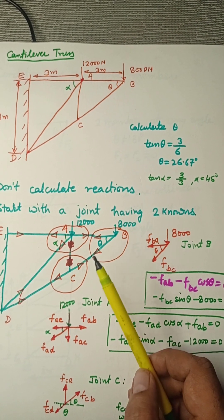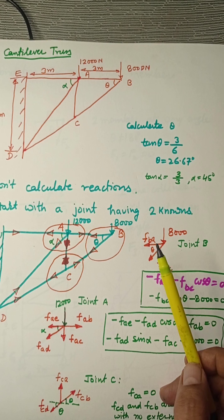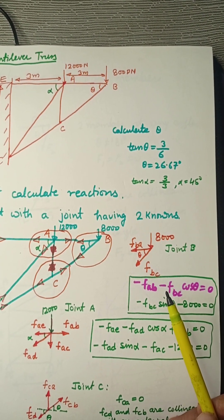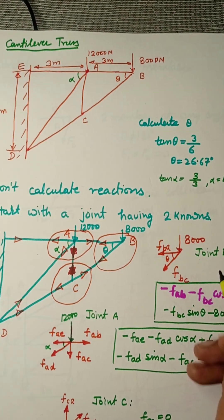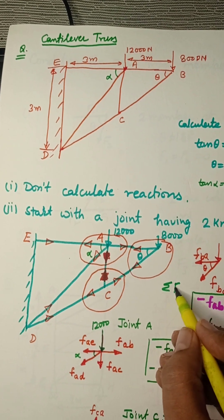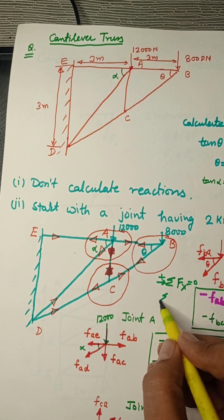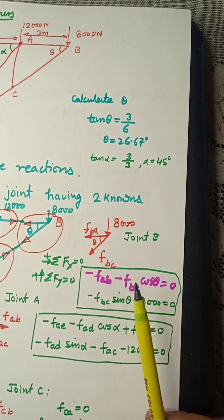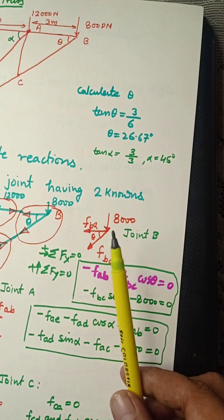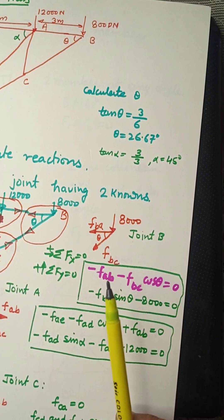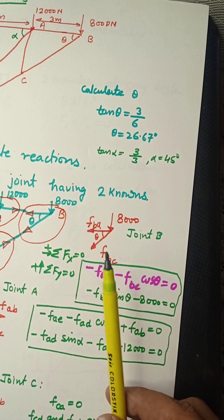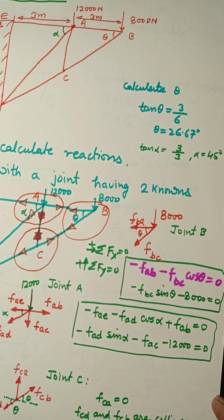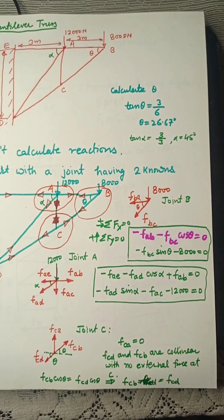Start with joint B. The nomenclature is FBA (force at B because of A) and FBC (force at B because of C). The angle is known. We write the equations using summation Fx = 0 (rightward positive) and summation Fy = 0 (upward positive). The equation becomes: minus FAB minus FBC·cos(theta) = 0; minus 8000 minus FBC·sin(theta) = 0. Joint B has been analyzed.